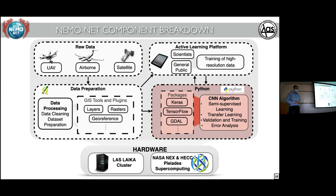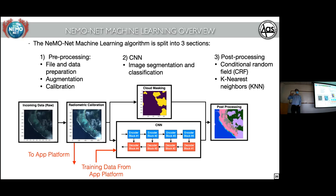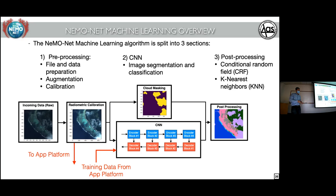Now I'll dig into the Python CNN package. The process for the NemoNet CNN starts with preprocessing — radiometric calibration, segmentation of data — then into the CNN architecture itself, then post-processing to clean up the classification output. The app platform feeds into training the CNN, and then trained results come back into the CNN.